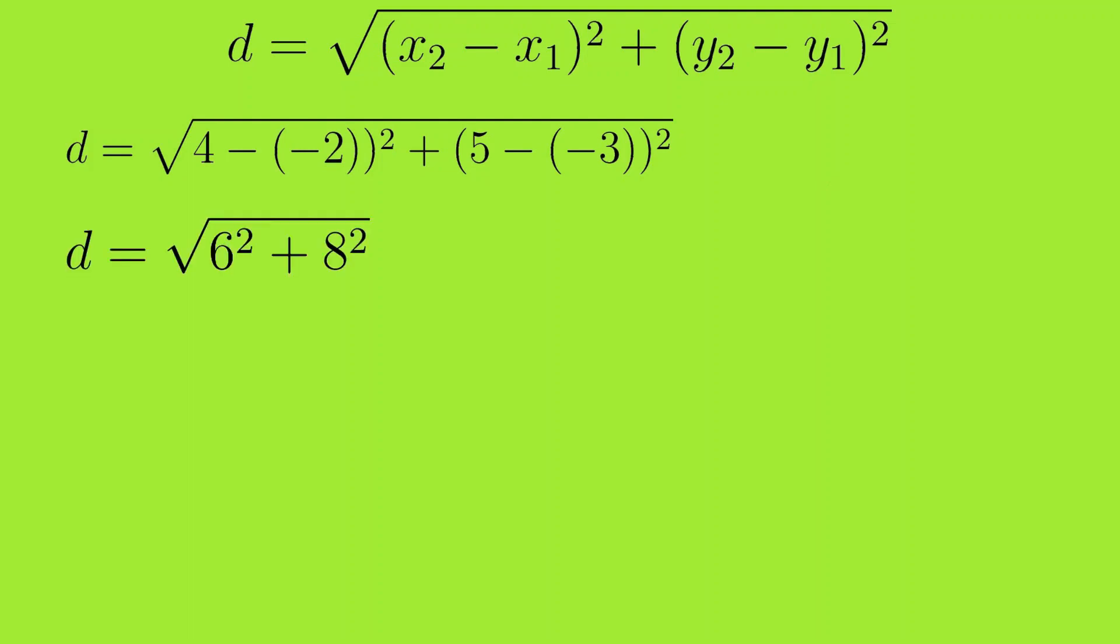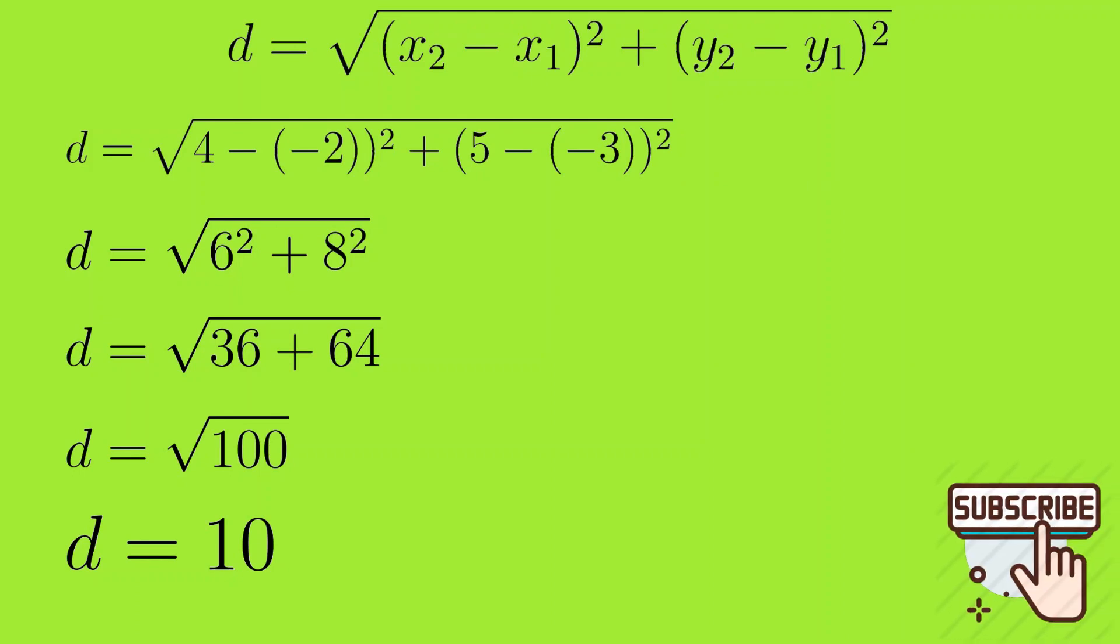So d is equal to square root of 6 squared plus 8 squared. That is d is equal to the square root of 36 plus 64. So d is equal to square root of 100 and d is equal to 10. And if you would simply plot these two points on the graph paper and measure them using scale, you will find that the distance is exactly 10 units.